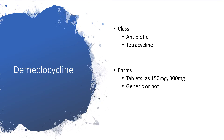Demeclocycline belongs to a class of medication known as antibiotics, a tetracycline, and comes in forms of tablets as 150 mg or 300 mg, either generic or not.